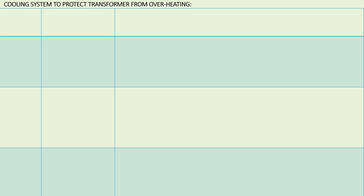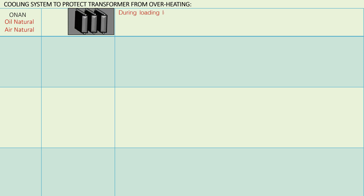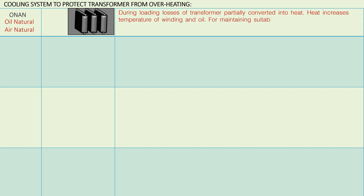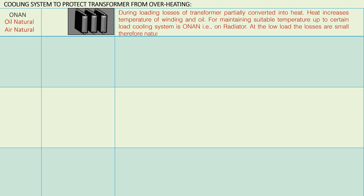Cooling system to protect transformer from overheating — ONAN (Oil Natural Air Natural): During loading, losses of transformers are partially converted into heat, which increases the temperature of the winding and oil. For maintaining a suitable temperature up to a certain load, the cooling system is on ONAN, that is on radiator. At low load, losses are small; therefore natural circulation of oil with ONAN is sufficient to cool the transformer.